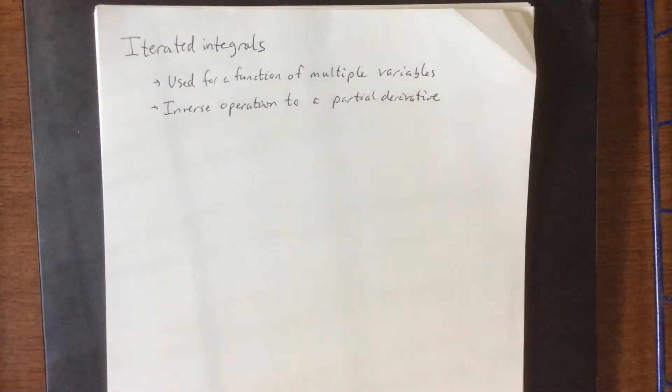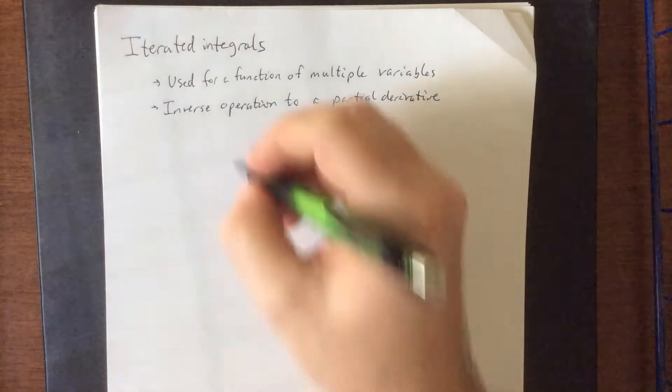When taking a partial derivative, we're treating one variable as though it's an actual variable and treating any other variable as though it's a constant.